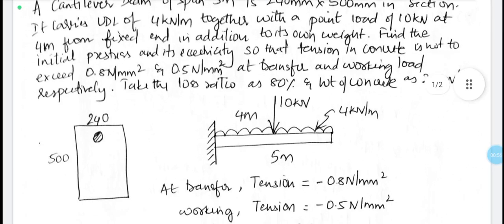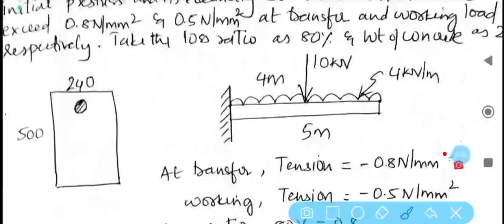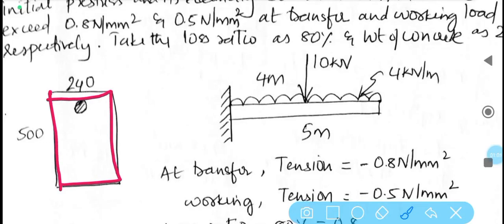Let us draw this sketch here. The cross section of the beam is 240 by 500 and there are cables located at tension edge 250 by 500. Depending upon the statement, let us draw the cantilever beam.